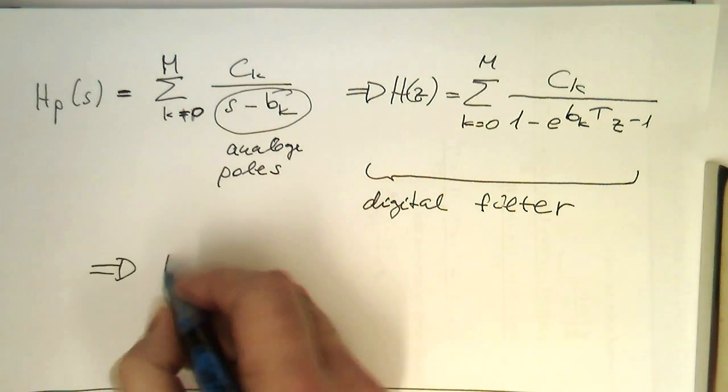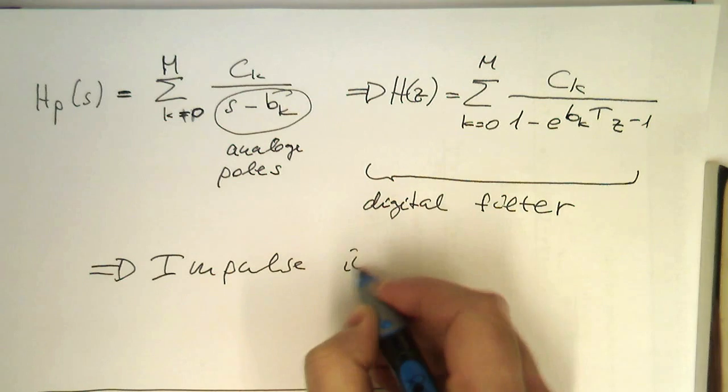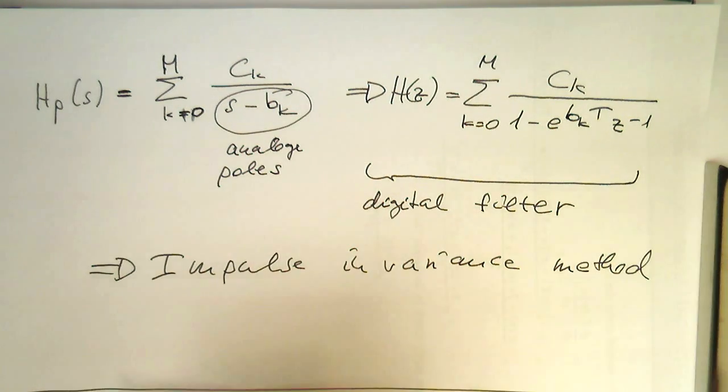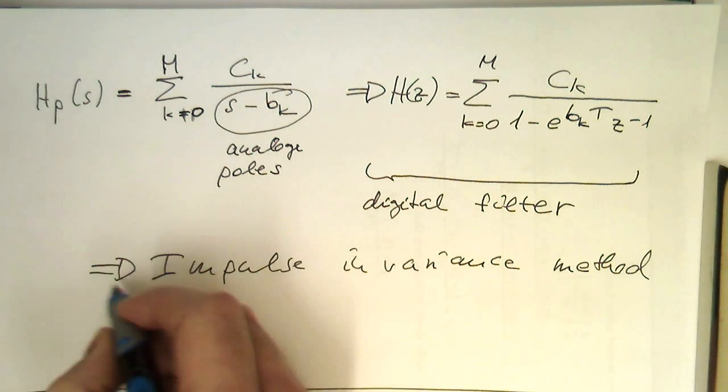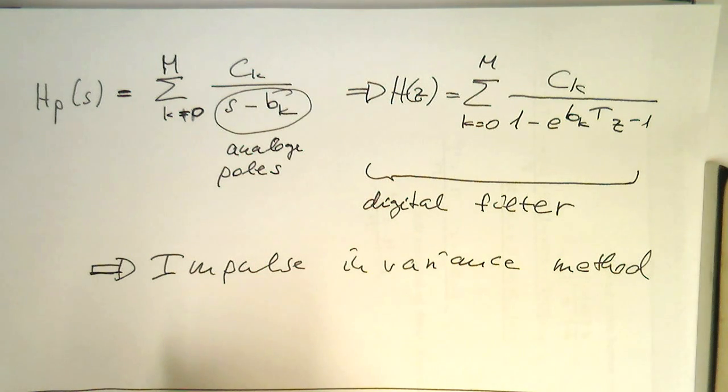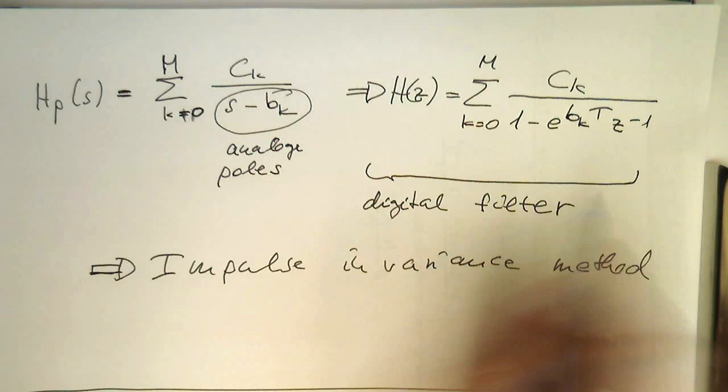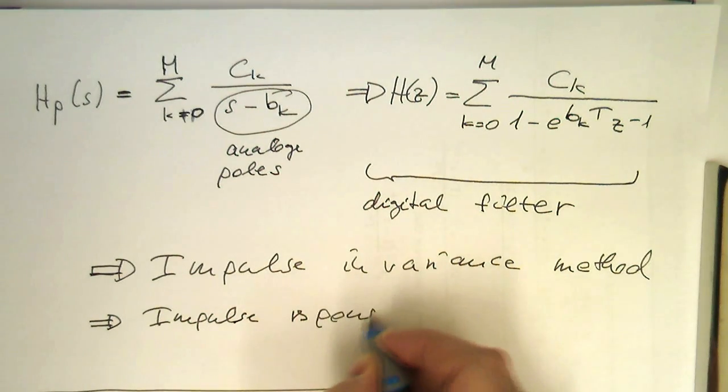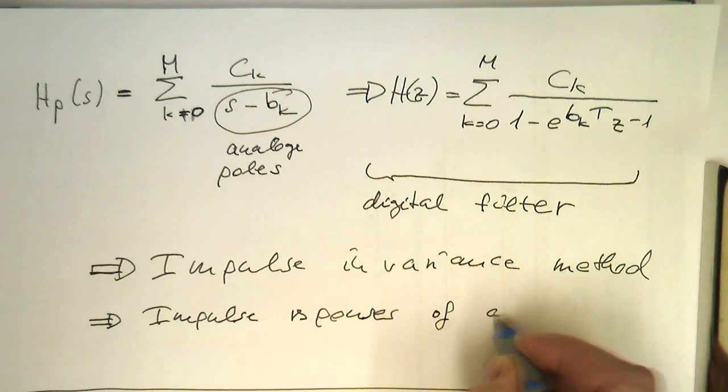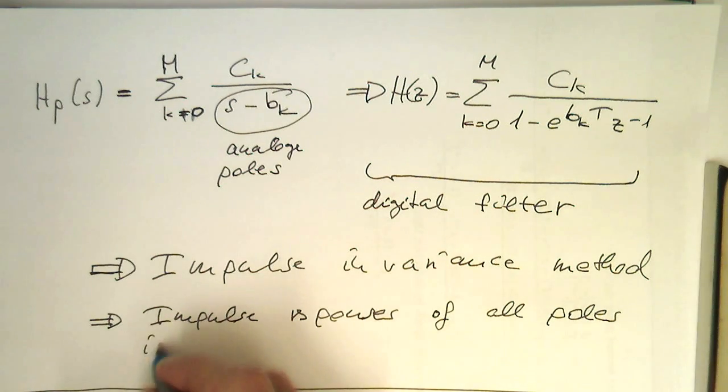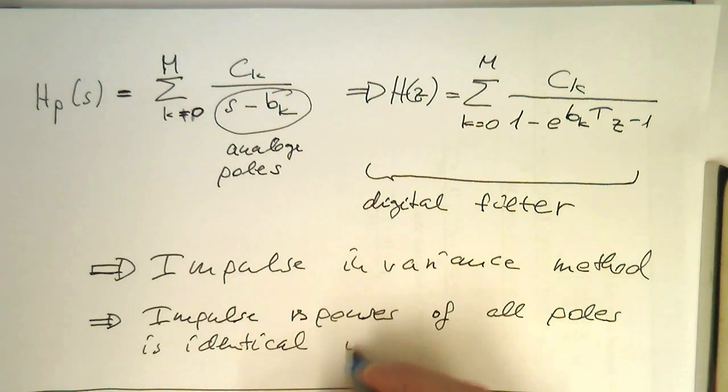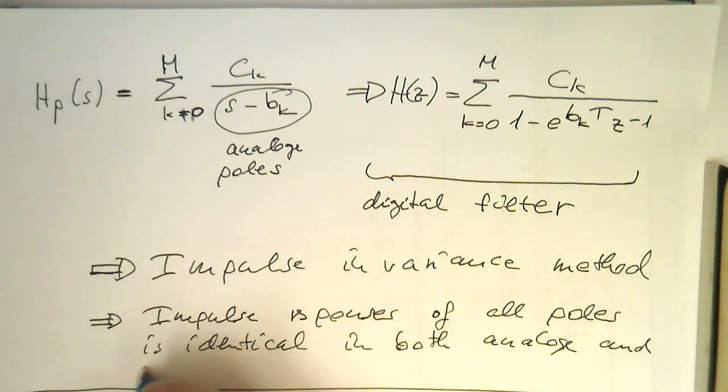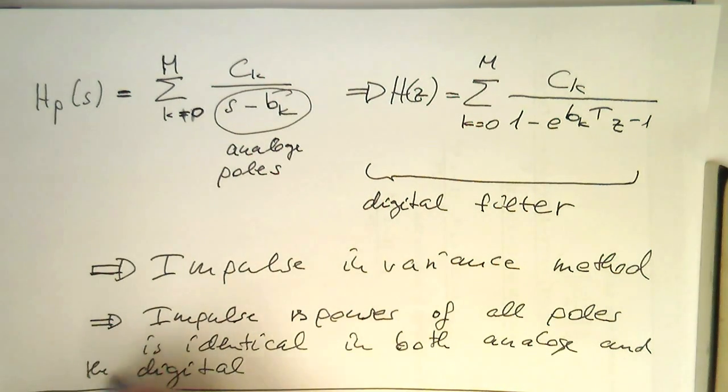And this method is called the impulse invariance method. Because remember from our initial point of view that the impulse response of these poles is identical in the analog domain and in the sample domain. So the impulse responses of all poles is identical in both analog and the digital domain.